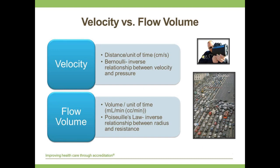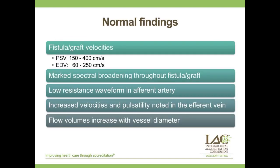Velocity and flow volume are two entirely different things, and you need both in your criteria. Velocity looks at distance over a unit of time; flow volume looks at volume over a unit of time. Normal findings in an AVF: peak systolic velocities of 150 to 400 cm/s, end diastolic velocities between 60 and 250 cm/s — much higher than in a normal artery. You would see marked spectral broadening, low resistance waveform in the afferent artery, increased velocities and pulsatility in the efferent vein, and flow volumes that increase with vessel diameter.